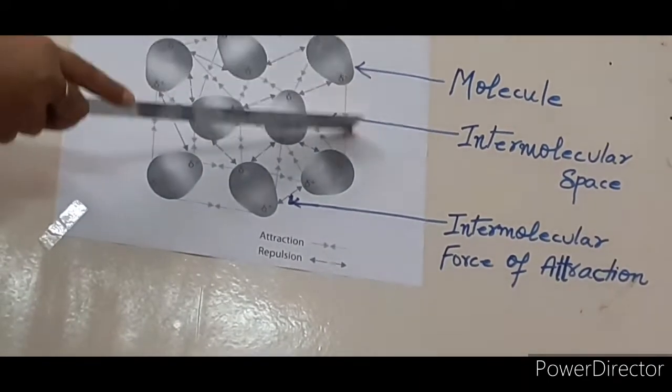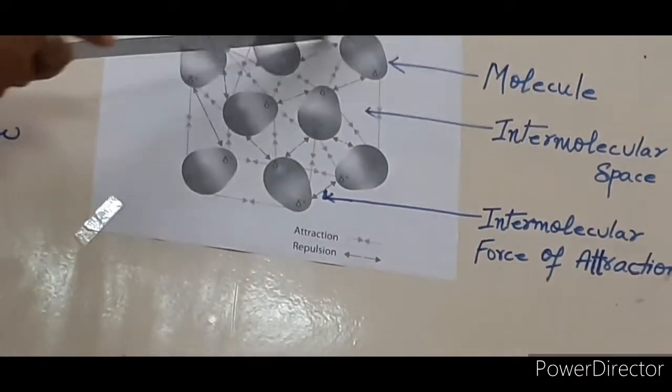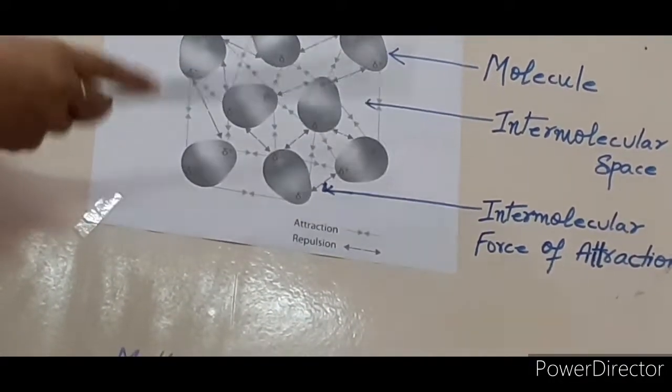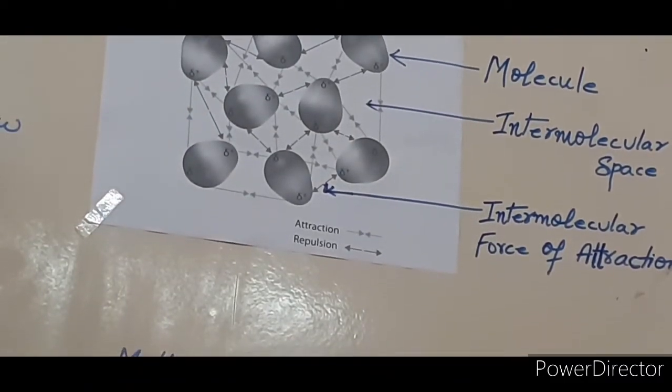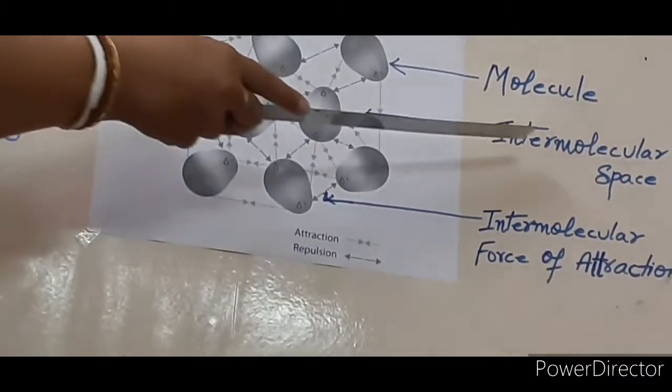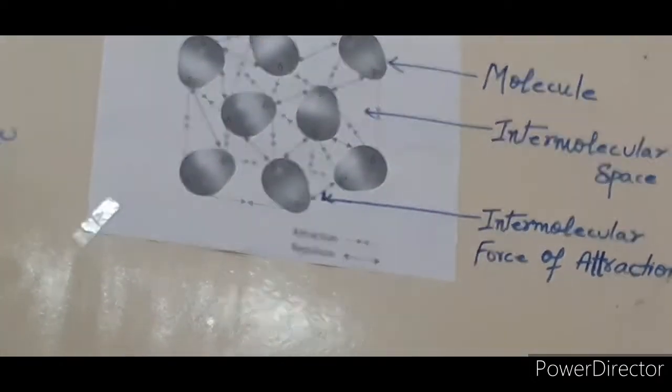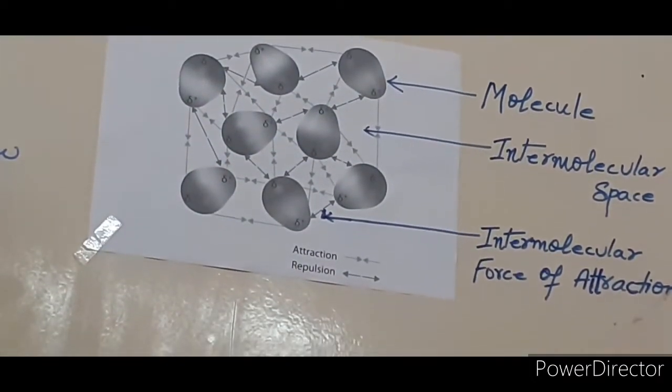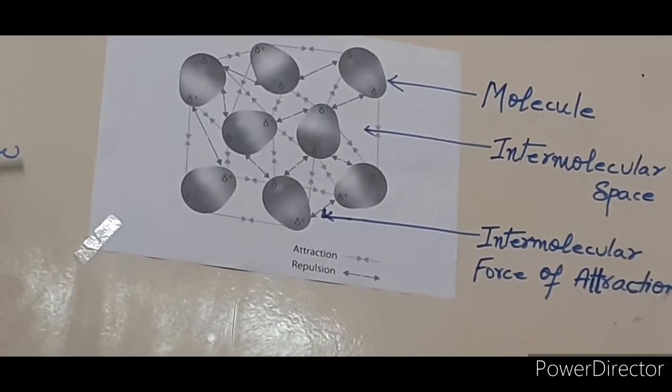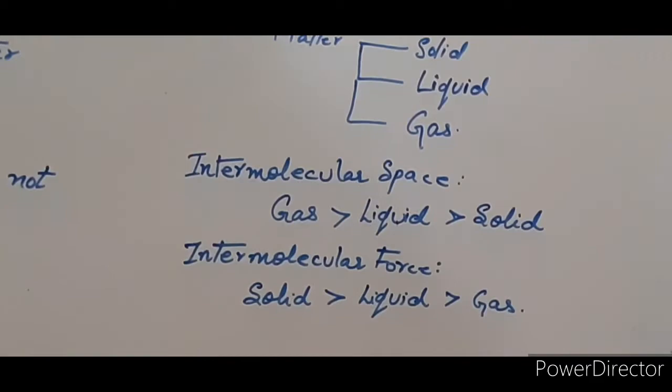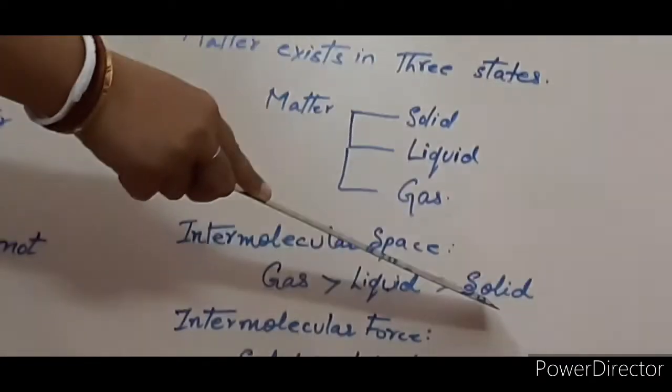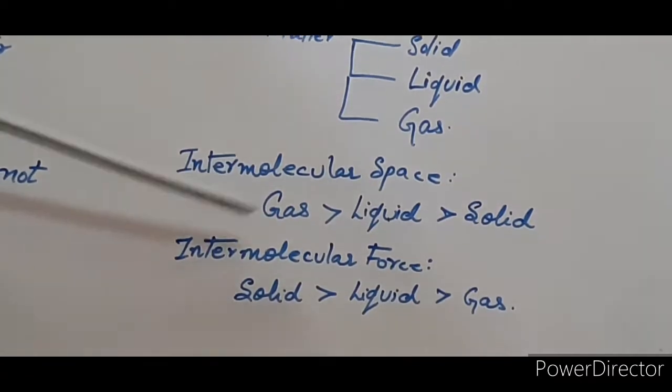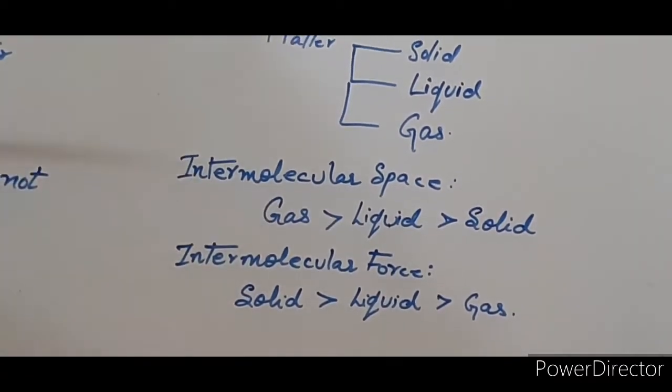Here, you see, there is some space between the two molecules. This space or gap between the two molecules is known as intermolecular space. In solids, the intermolecular space is very small and in gas, it is very large. So solids have very less intermolecular space and gases have very large intermolecular space.